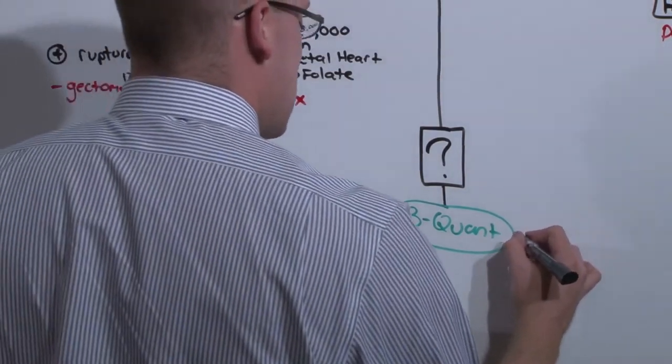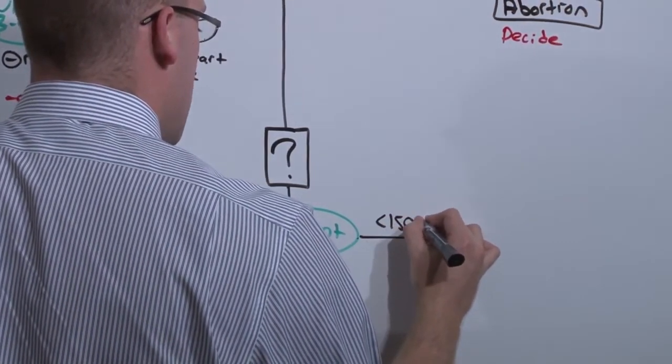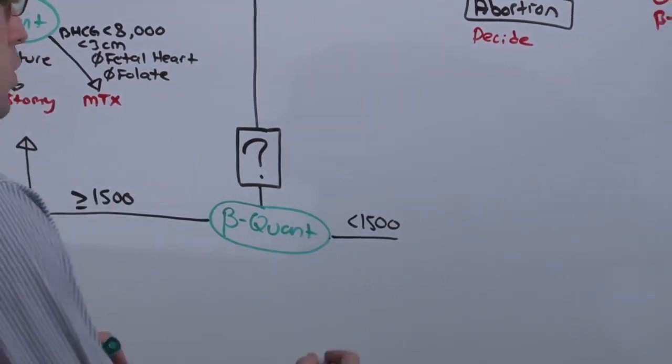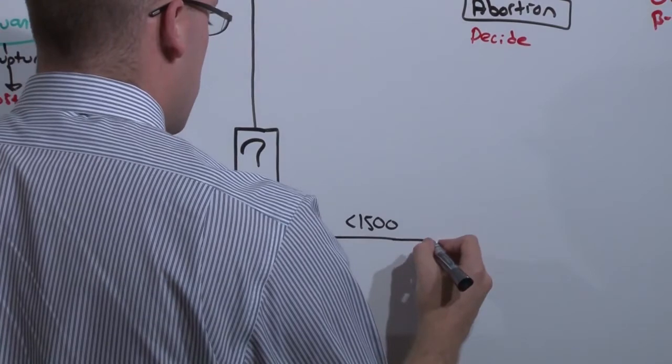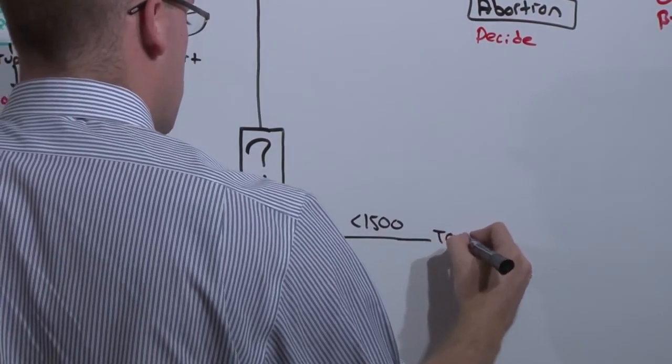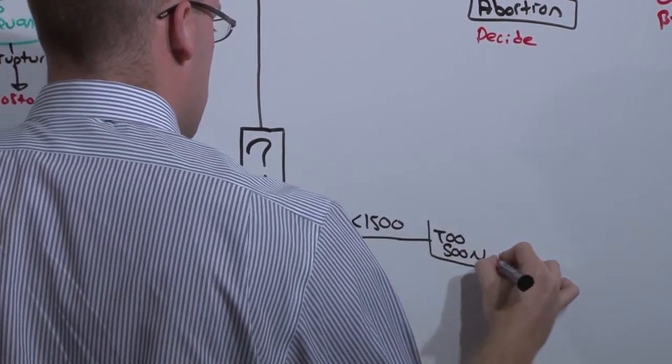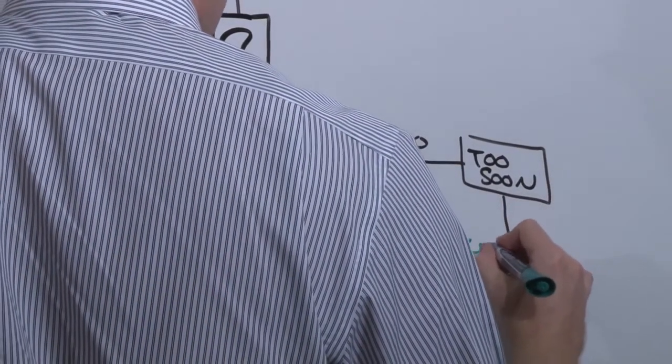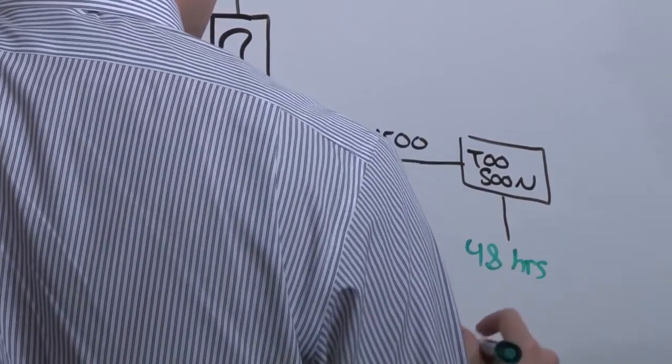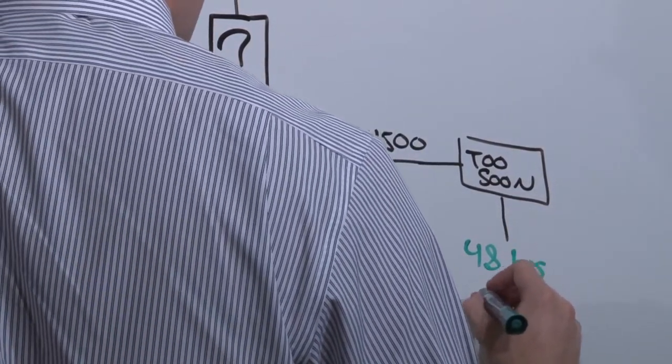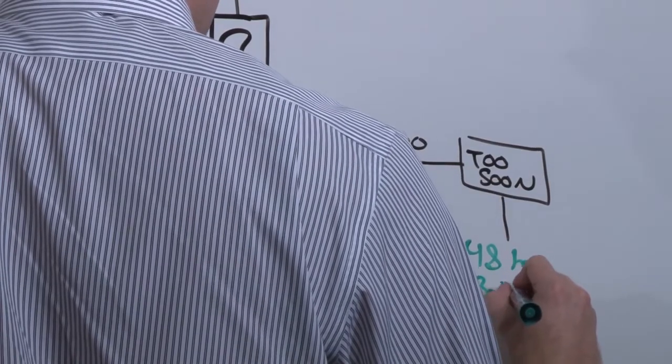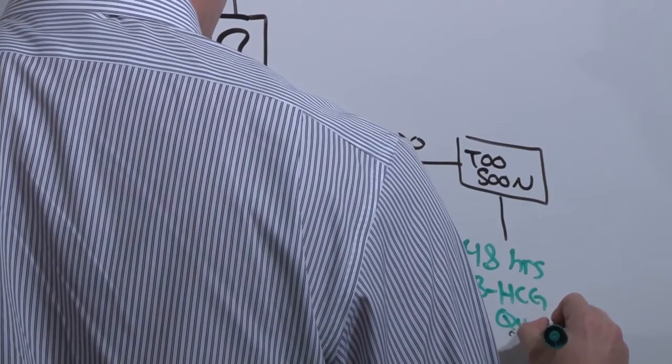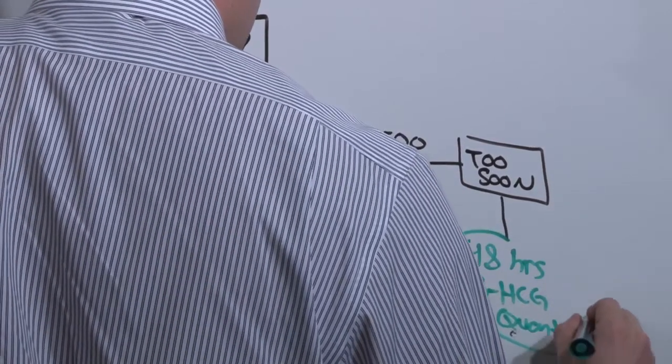But if it is less than 1500, you really can't be sure if it's in the uterus or not. You just can't see it at all. So if it is less than 1500, it's too soon to tell. And if it's too soon to tell, you're going to repeat the beta quant in 48 hours. You may actually just send this woman away and say, come back in 48 hours. I will repeat the beta HCG, the beta quant.